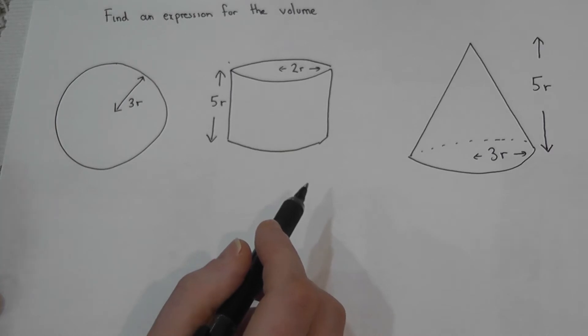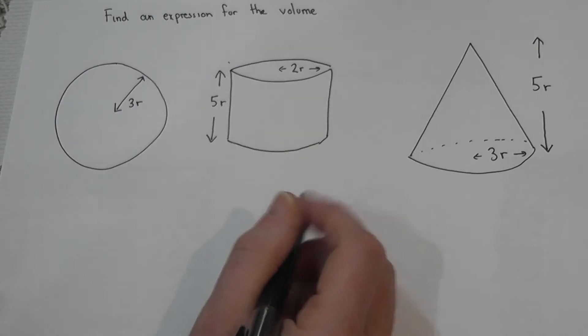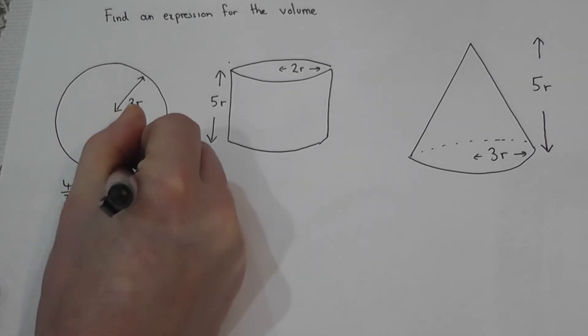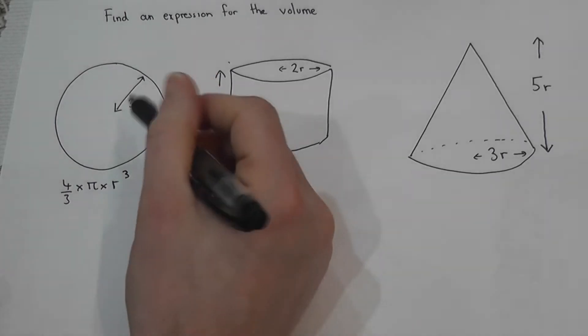This revises the formulae for the volume and also involving algebra as well. So a sphere volume is given by four thirds times pi times by the radius cubed. But in this case the radius is given by not r but 3 lots of r.